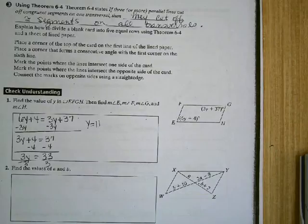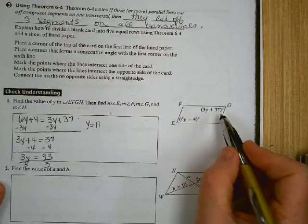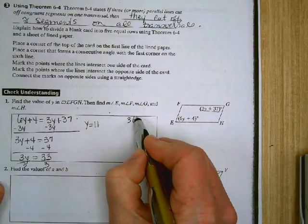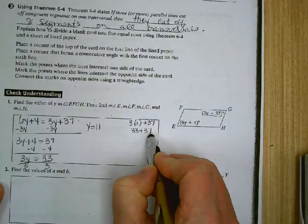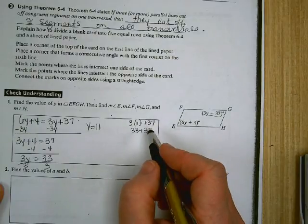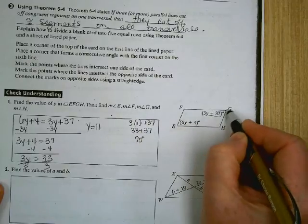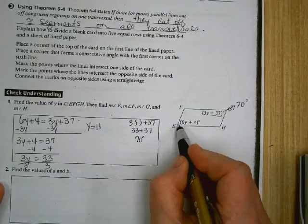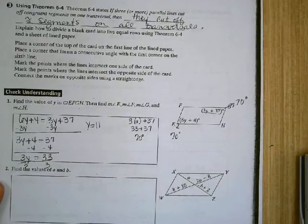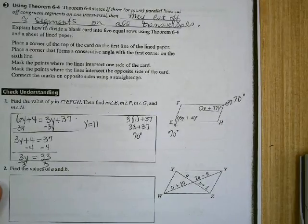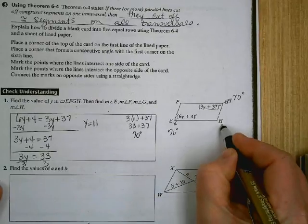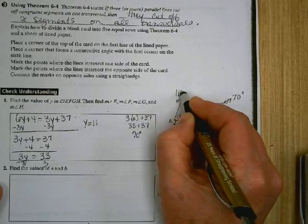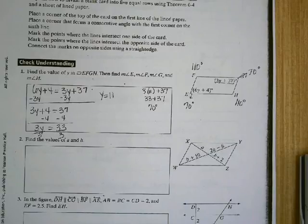Okay. If Y is 11, then I need to plug it in. I'm going to use this one first. 3 times 11 plus 37. 33 plus 37 is 70. So this angle is 70 degrees. Well, what's angle E? 70 degrees as well because they're congruent, right? What about the other two angles in the picture? They're congruent to each other. They're supplementary with these. So this one has to be 110, and so does this one.